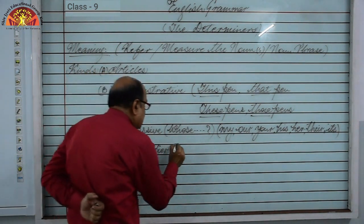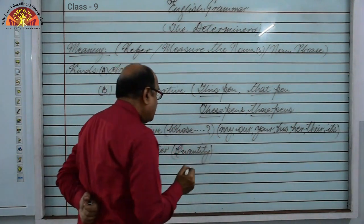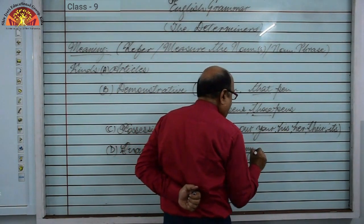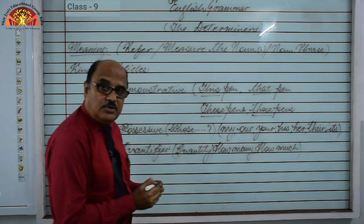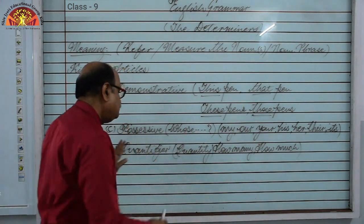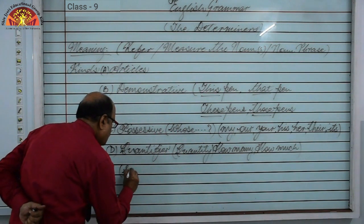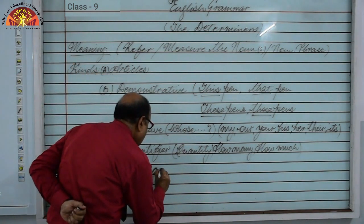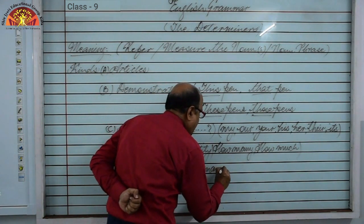The next determiner is quantifier, meaning we are talking about quantity. Quantity is always reflected through 'how many' and 'how much.' When we get answers to questions beginning with 'how many' or 'how much,' we use certain words like: some, any, much, many.